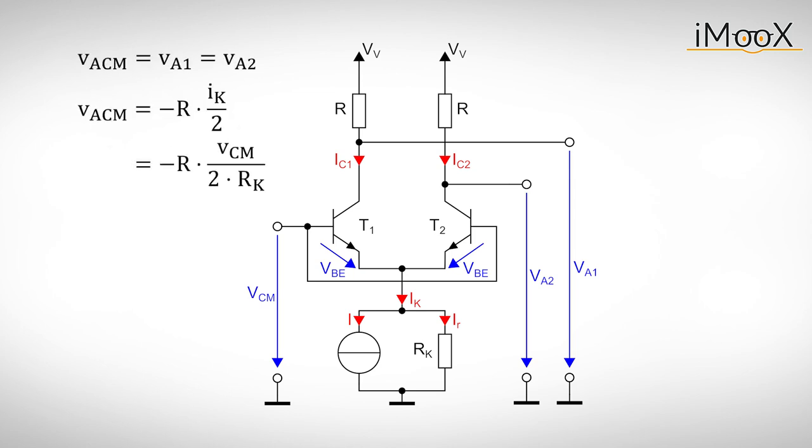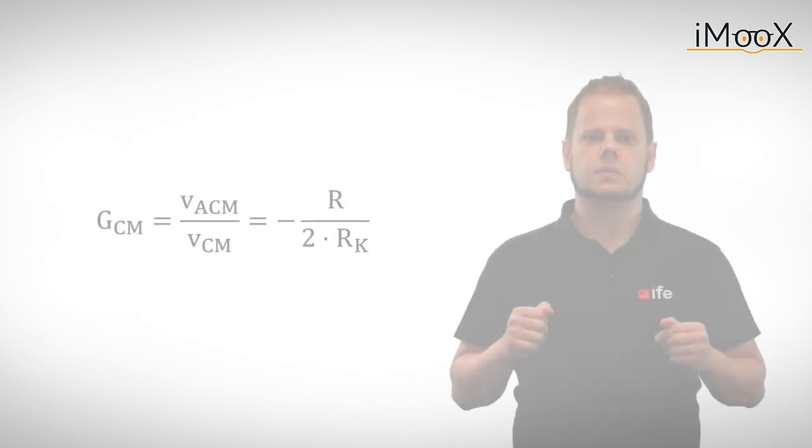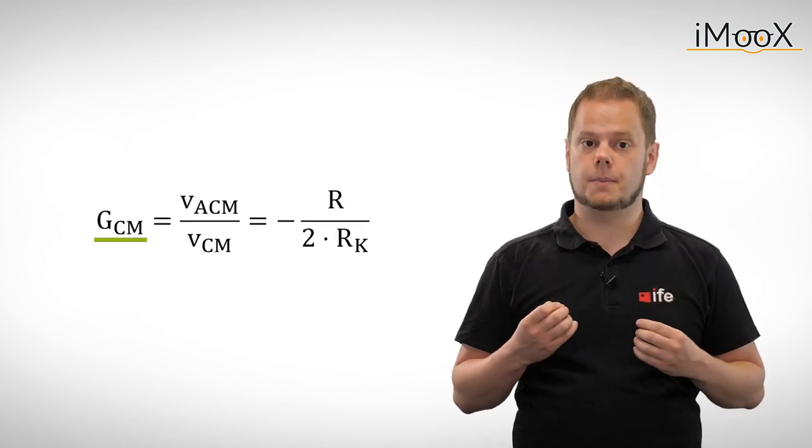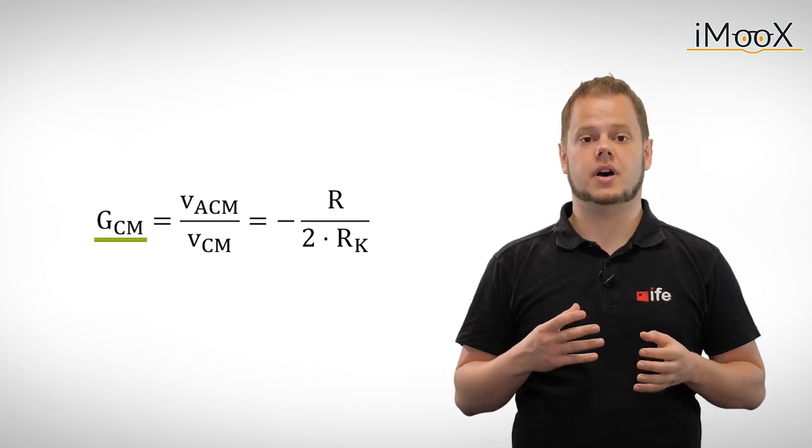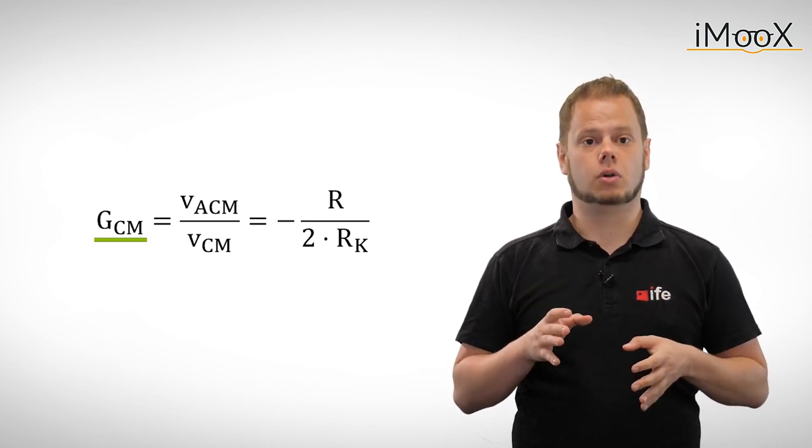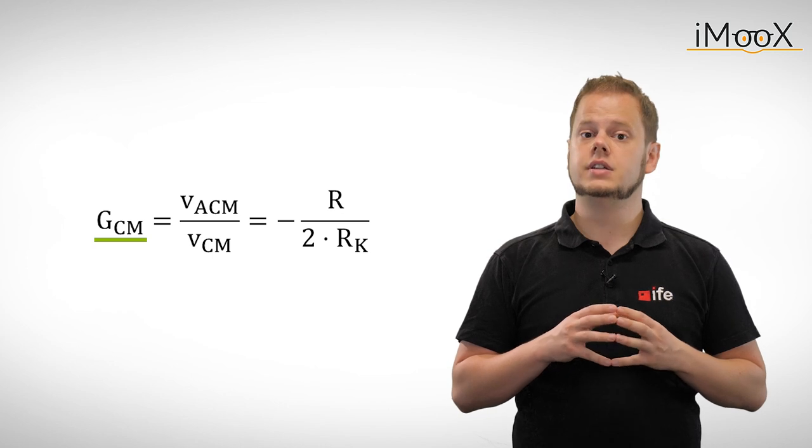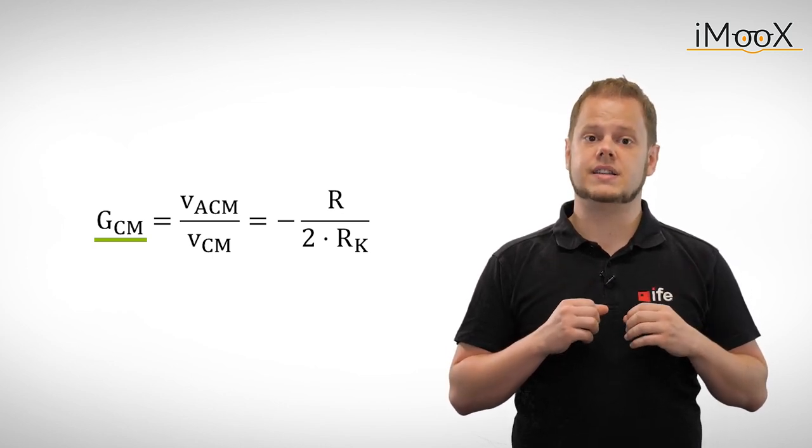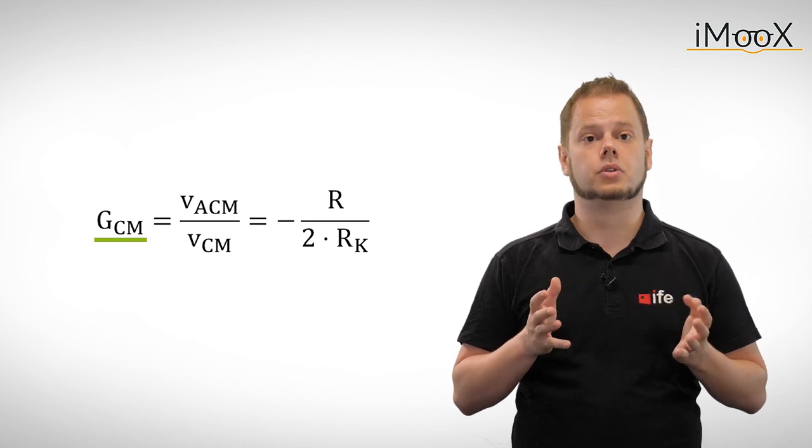Due to the same base-emitter voltages, one half of this current flows through each of the transistors. Similar to before, these currents change the output voltages. This time, however, the change is the same for both outputs. This allows us to define the common mode gain GCM. A differential amplifier should have a very small common mode gain. Ideally, the common mode gain is zero and the differential amplifier basically ignores any common mode input signals.